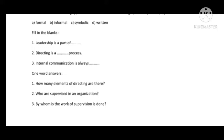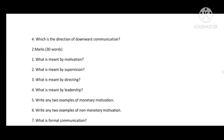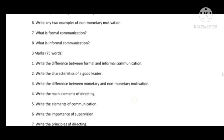Second one-word answer: Who are supervised in an organization — Subordinates. Third: By whom is supervision done — by Supervisors. Fourth: Which is the direction of downward communication — it goes from up to down. This completes Unit 7; moving on to Unit 8.